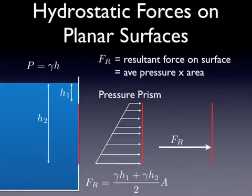The resultant force is equal to the average pressure on that surface times the surface area. If we add some dimensions, we can calculate the average pressure as gamma h at the top plus gamma h at the bottom divided by 2. That gives us the average pressure. We multiply that by the area, and that gives us the resultant force. This is a simple way you can derive this any time you need to.